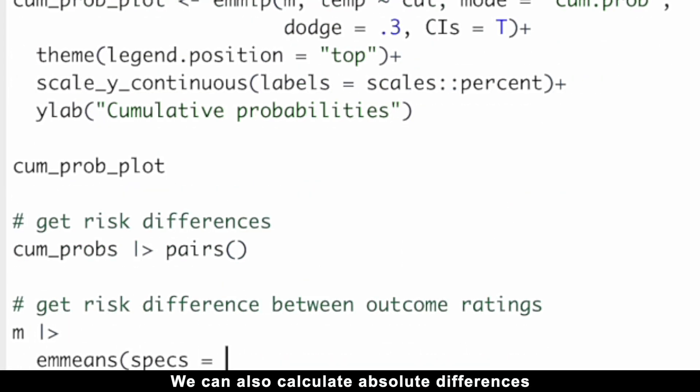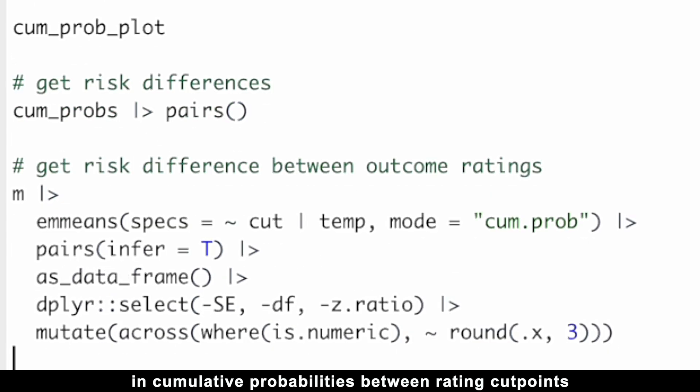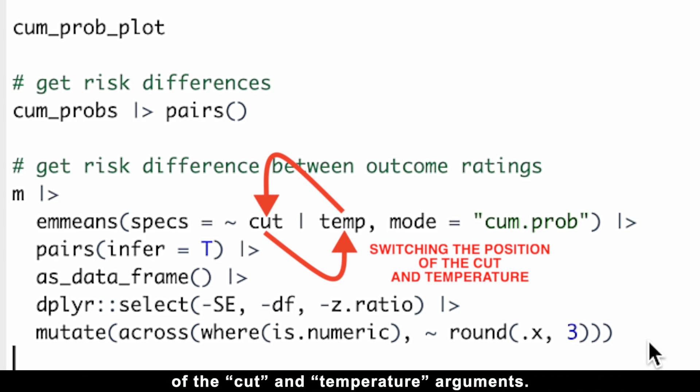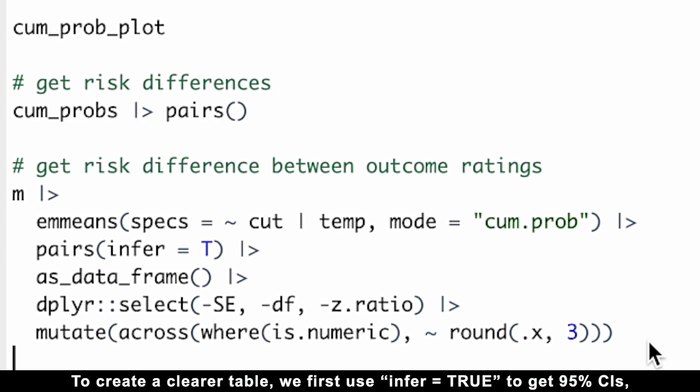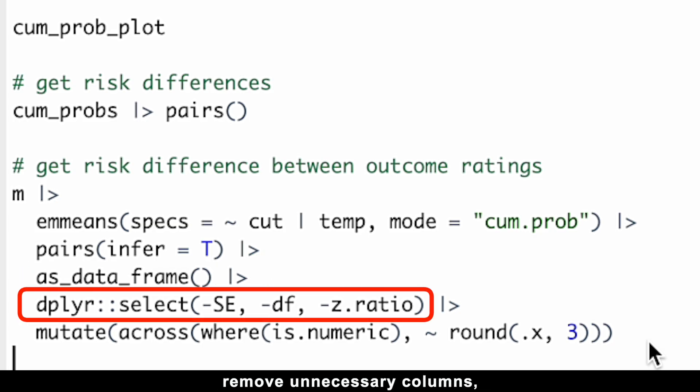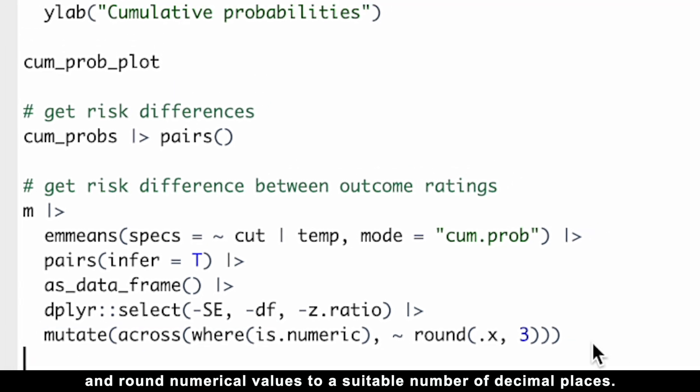We can also calculate absolute differences in cumulative probabilities between rating cut points using the emmeans package by simply switching the position of the cut and temperature arguments. To provide a clearer table, we first use infer equals TRUE to get 95% confidence intervals, then convert the output to a data frame, remove unnecessary columns, and round numerical values to a suitable number of decimal places.